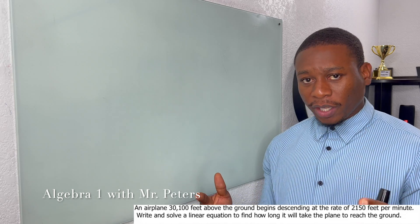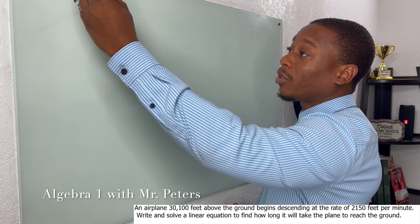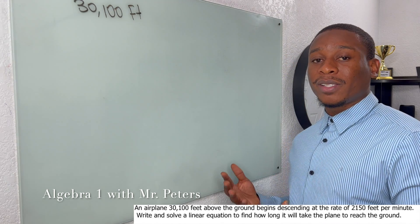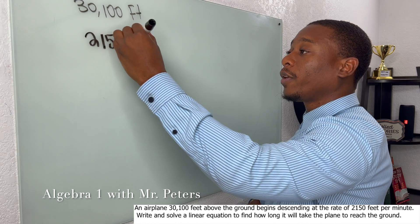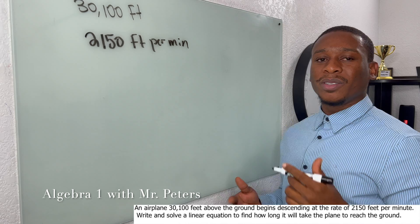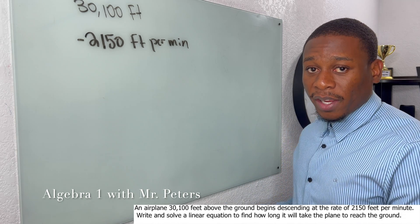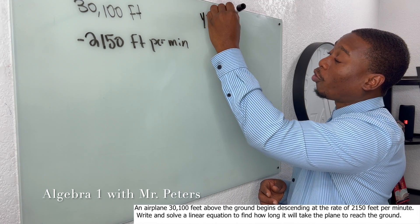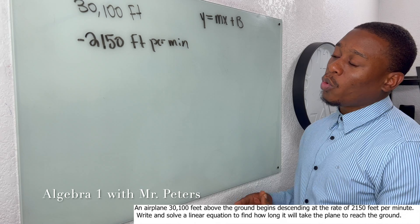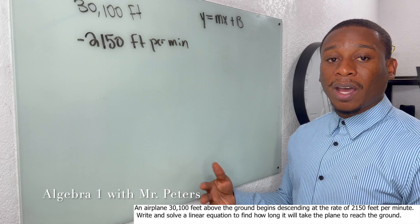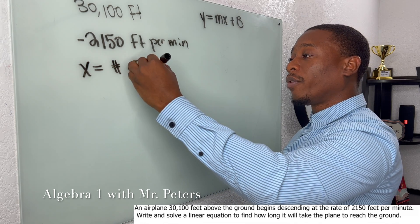Problem number three — we're dealing with airplanes and how long it will take the airplane to reach the ground. The airplane is 30,100 feet above ground and it's descending at a rate of 2,150 feet per minute. I'm going to put a negative sign out front because descending means going down — that's a negative slope. We use slope-intercept form y = mx + b, and x equals the number of minutes.